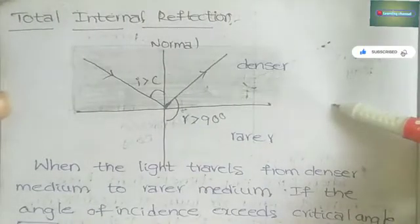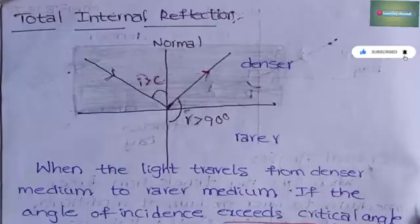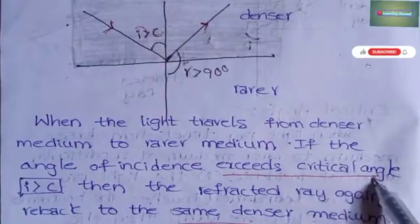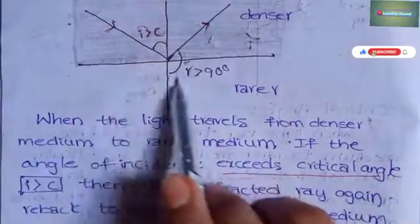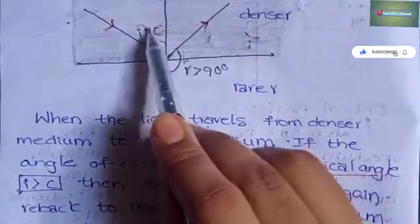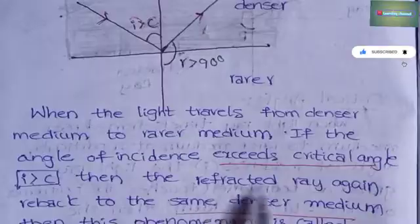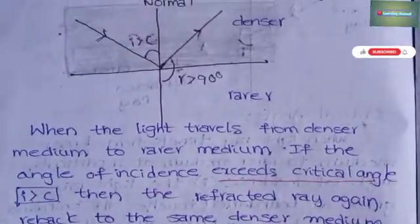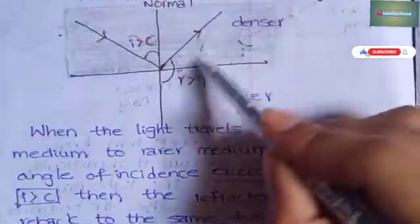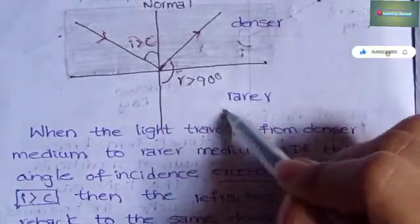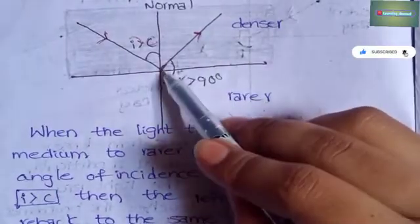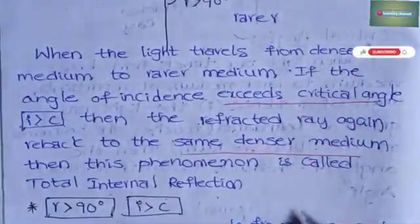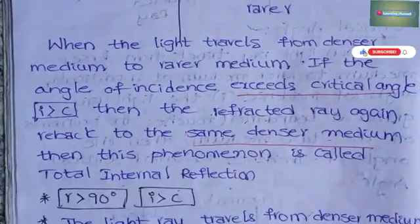Total internal reflection: when a light ray travels from denser medium to rarer medium, if the angle of incidence exceeds the critical angle, the refracted ray goes back to the same denser medium. The ray does not refract into the rarer medium; instead, it reflects back into the denser medium. This phenomenon is called total internal reflection.